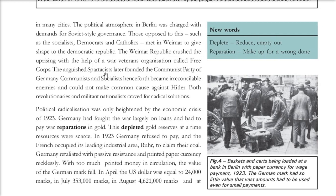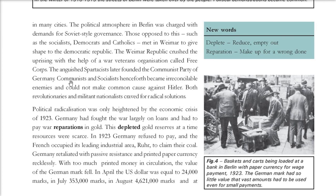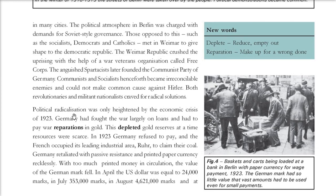Both revolutionaries and militant nationalists clamored for radical solutions. This political radicalization was heightened by the economic crisis of 1923. Germany had fought the war with loans and had to pay war reparations in gold, depleting its gold reserves. In 1923, Germany refused to pay because it had no money. France responded by occupying the leading industrial area of Germany — the Ruhr — and claiming its coal.